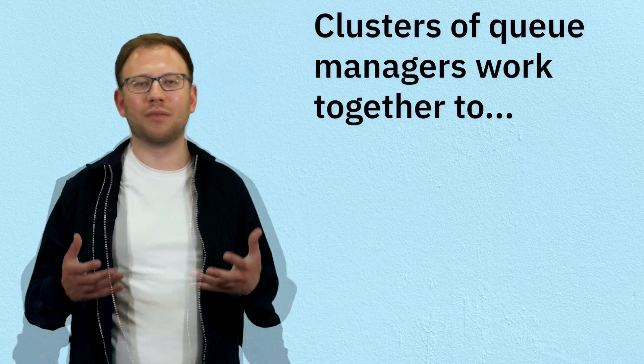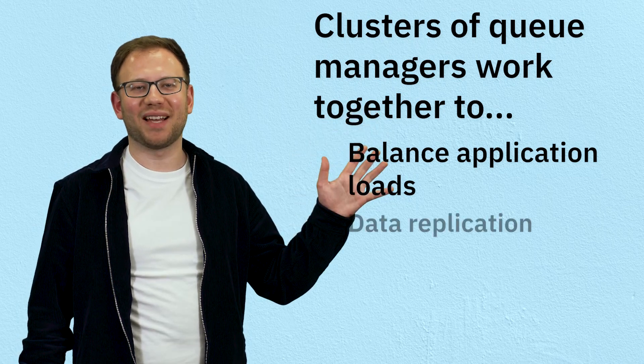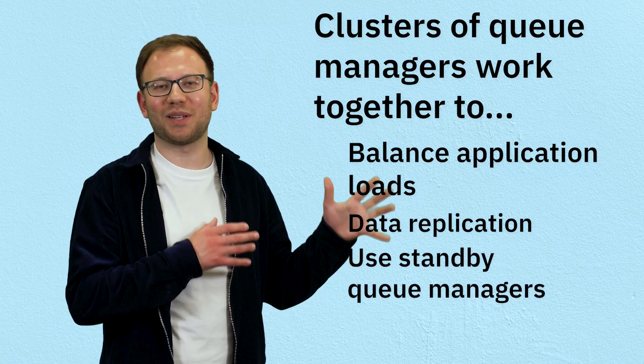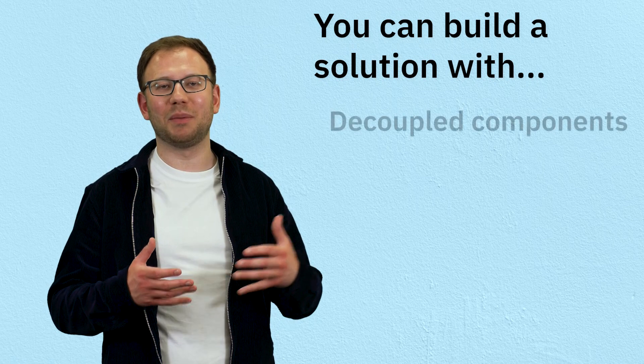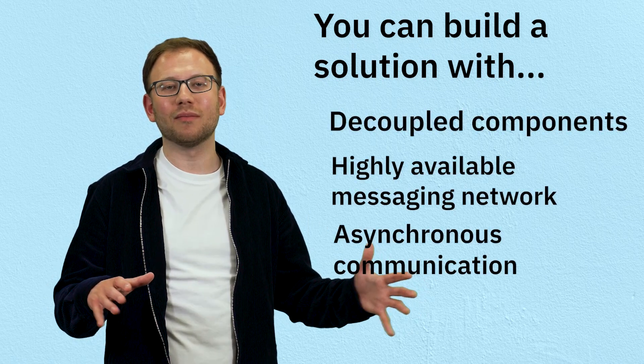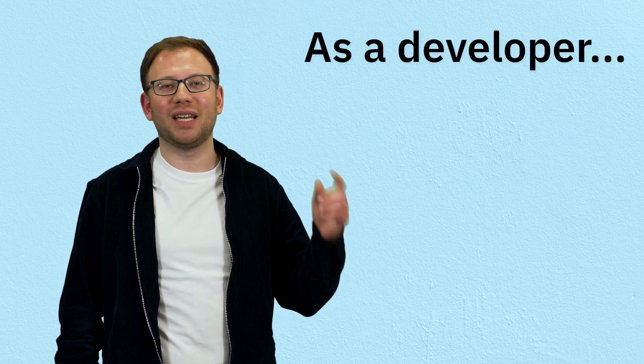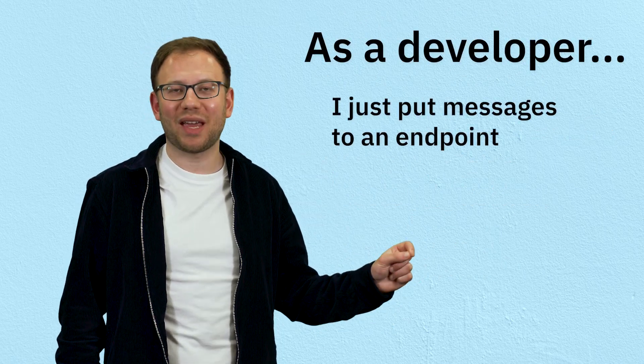Because we want to make sure that all of our components are loosely coupled, we need to make sure that our messaging solution can deal with failures. So if an endpoint or a queue manager goes down, or if there's a massive surge in demand, messages can still get sent. We do this in IBM MQ through clustering. That's where we group together queue managers to work together and do specific things, like balancing application loads, data replication, or having some queue managers wait on standby in case the active ones go down — to take up that load and make sure the whole cluster is extremely highly available. The upshot of all of this is that you can build out a solution where you've got decoupled components and a super powerful messaging mesh between them, and all you have to do as an application developer is put your messages to an endpoint — everything else is handled for you by MQ.